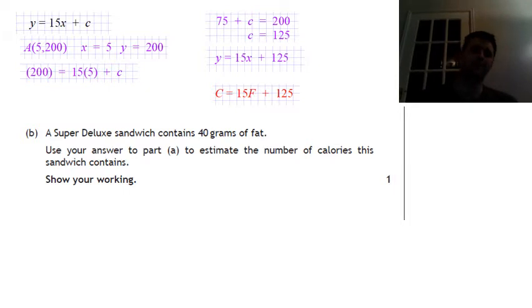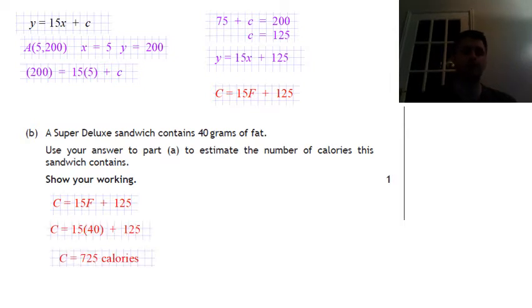So again, we've got that first part there. And we'll look at calories. F stands for fat. So we see F in the formula, we only put 40 in instead. So that's the formula, calories equals 15 times the fat plus 125. Put it in.